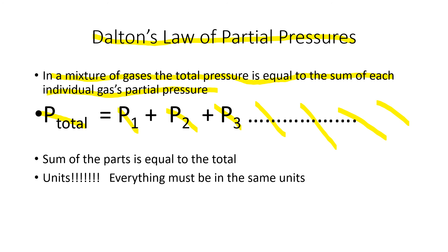There are two things to know to deal with Dalton's Law of Partial Pressures. The first is that the sum of all the parts added together equals the total. The second thing to watch out for is units — everything must be in the same units when adding or subtracting. Think about it like weighing three objects: if you have one in grams, one in milligrams, and one in ounces, you couldn't just add those numbers together. You'd first have to convert them to the same unit. The same principle applies to gases and pressures.